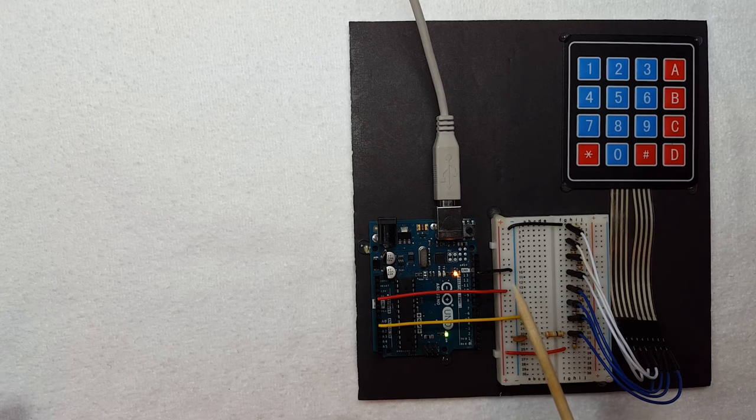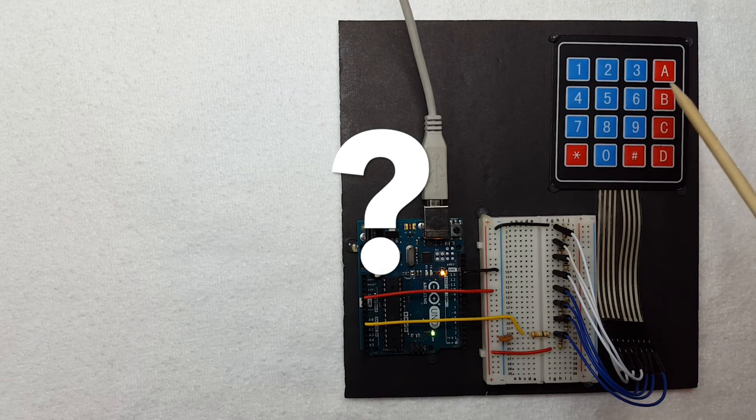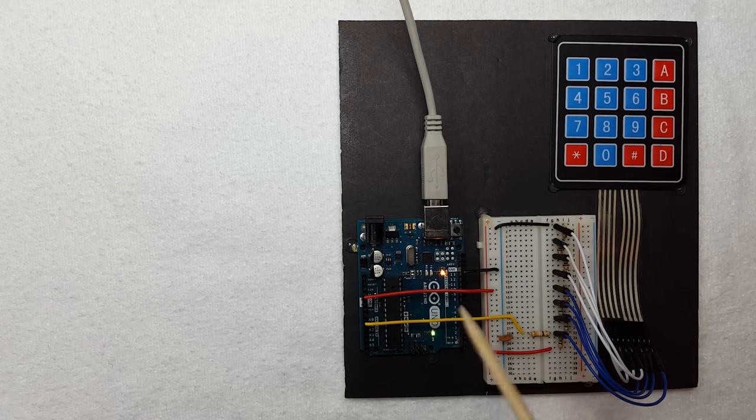As you can see we only have plus, minus, and one pin. How is it possible to read 16 buttons with just one pin?